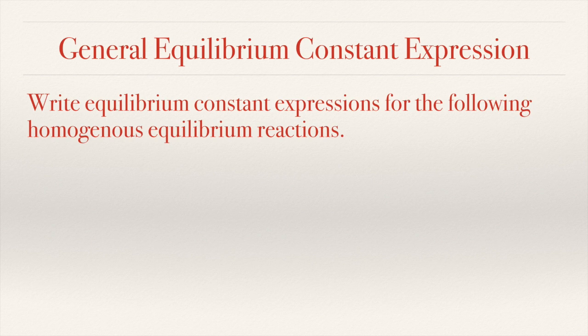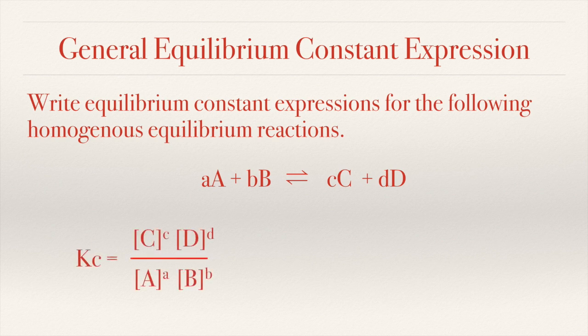Here is a general expression involving a general equation like A moles of A reacting with B moles of B, reversibly giving you C moles of C and D moles of D. If you write the equilibrium constant expression for this, it is products over reactants: concentration of C raised to lowercase c times concentration of D raised to lowercase d, divided by concentration of A raised to lowercase a and concentration of B raised to lowercase b.